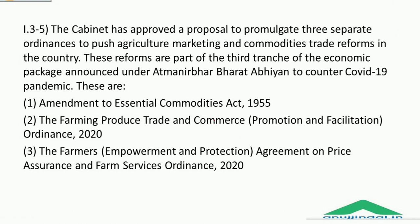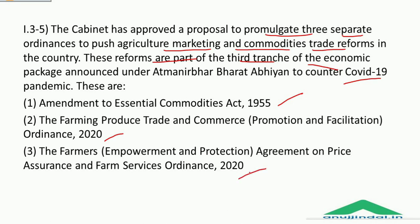For questions 3 to 5, there is one passage. The cabinet has approved a proposal to promulgate three separate ordinances to push agriculture, marketing and commodities trade reforms in the country. These reforms are part of the third tranche of the economic package announced under Atmanirbhar Bharat to counter the COVID-19 pandemic. The three ordinances are: amendment to Essential Commodities Act of 1955; the Farming Produce Trade and Commerce (Promotion and Facilitation) Ordinance 2020; and the Farmers Empowerment and Protection Agreement on Price Assurance and Farm Services Ordinance 2020.